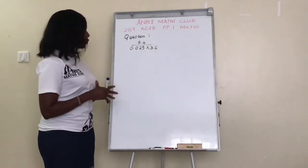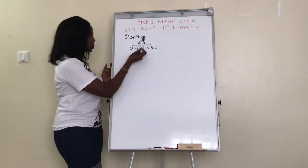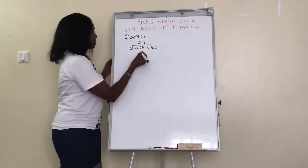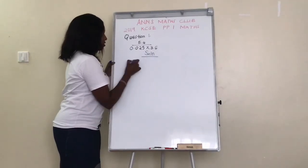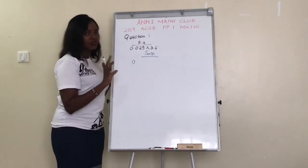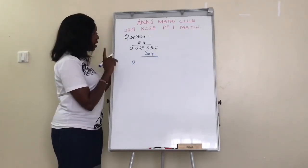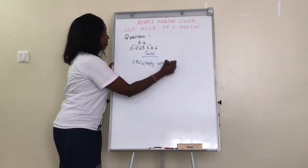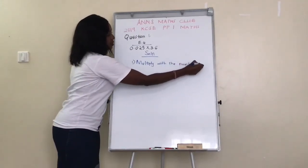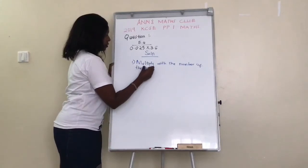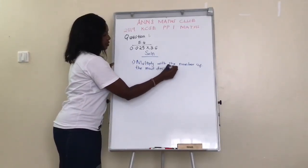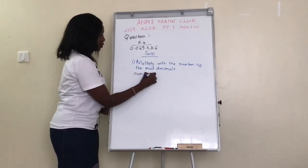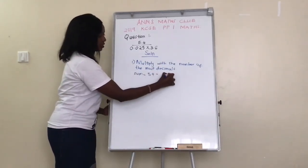So we have question 1. The question you've been given has the numerator 5.4 divided by 0.025 times 3.6. You can just come here and write solution. The first step you need to know — because you've been asked not to use a calculator or math table — is that you should multiply with the number of the most decimal places. In the numerator we have 5.4, which has 1 decimal place.